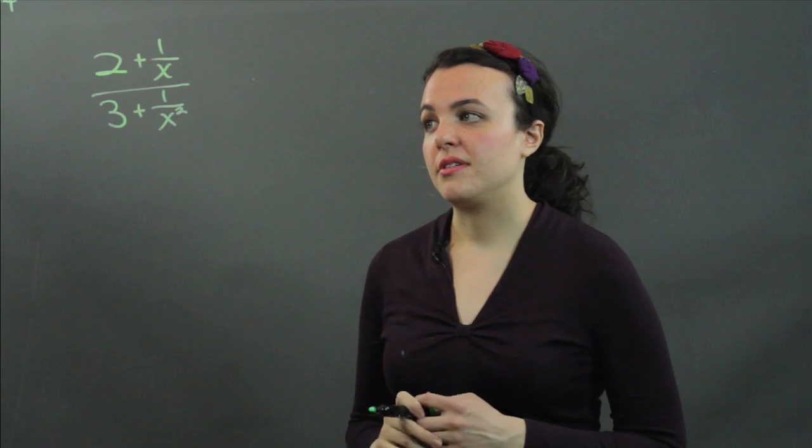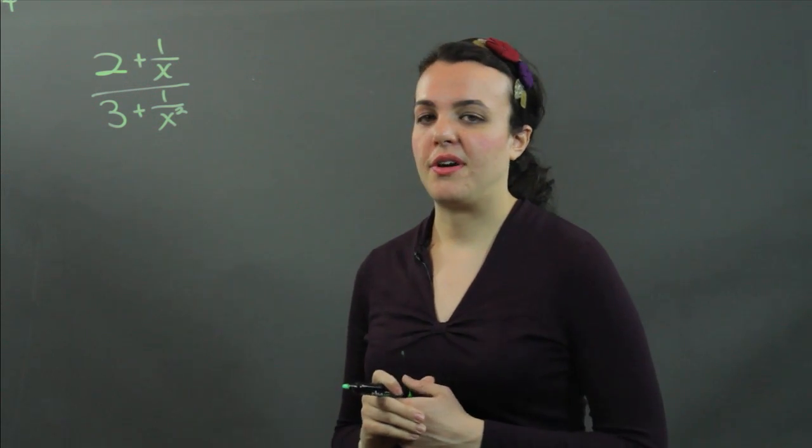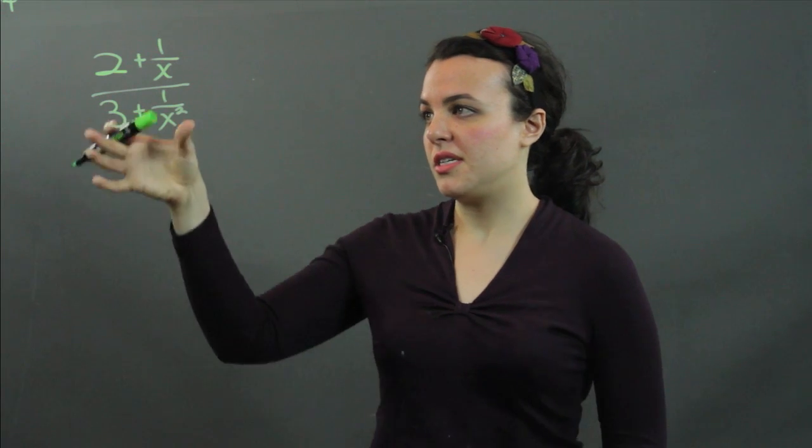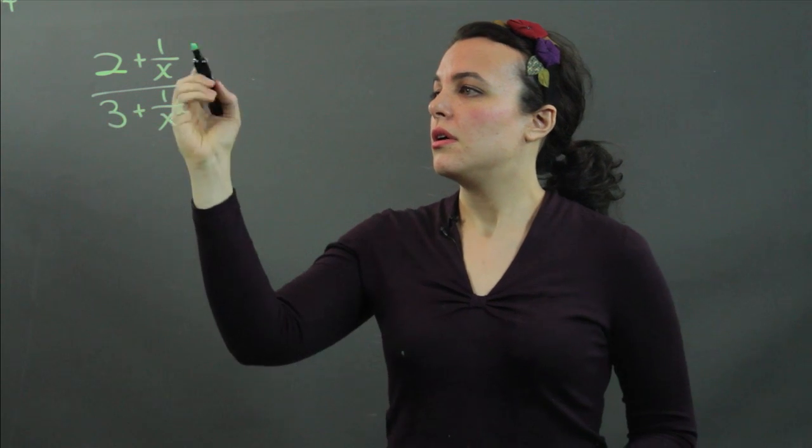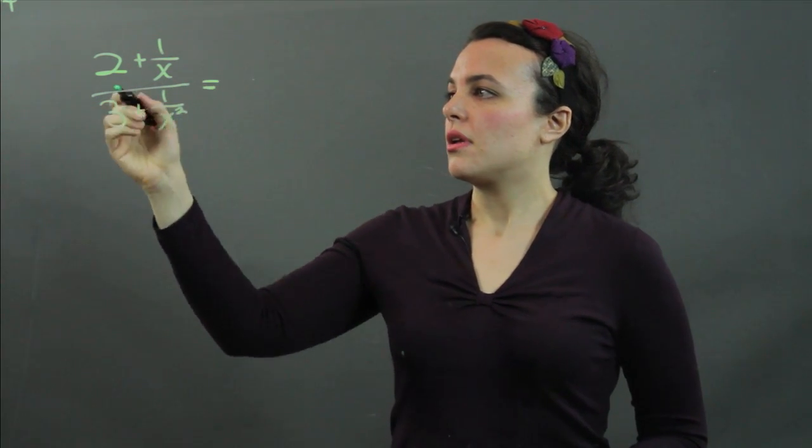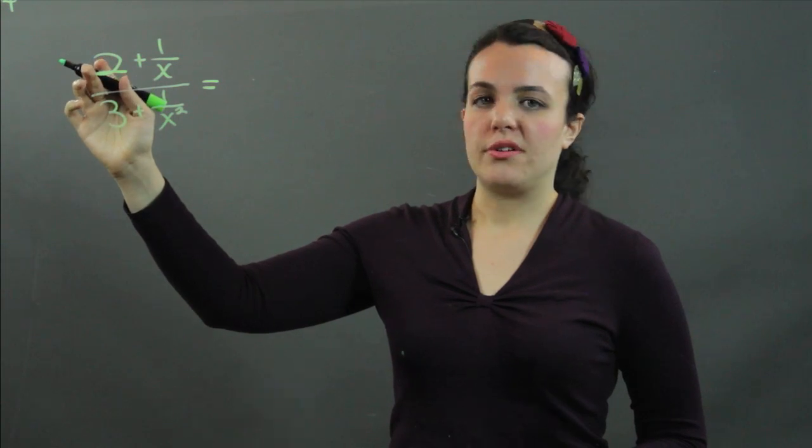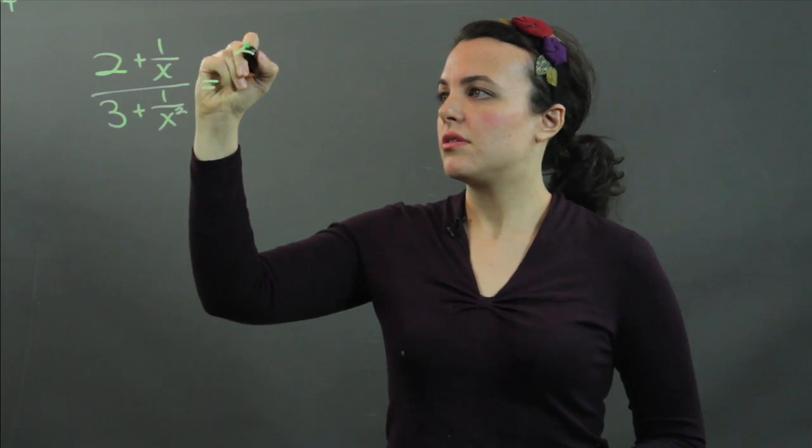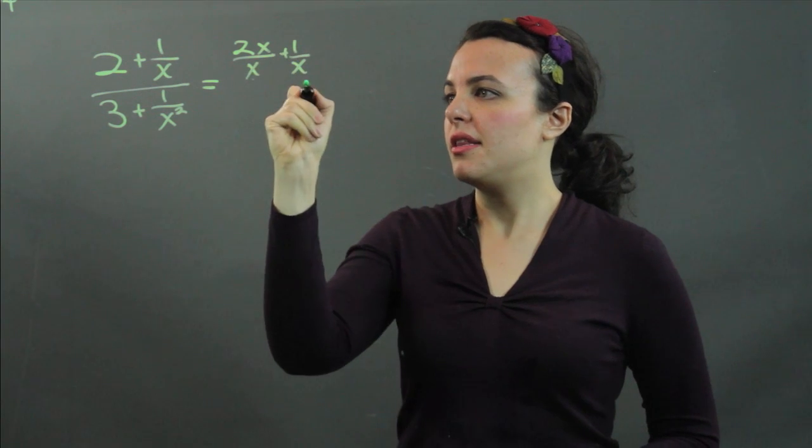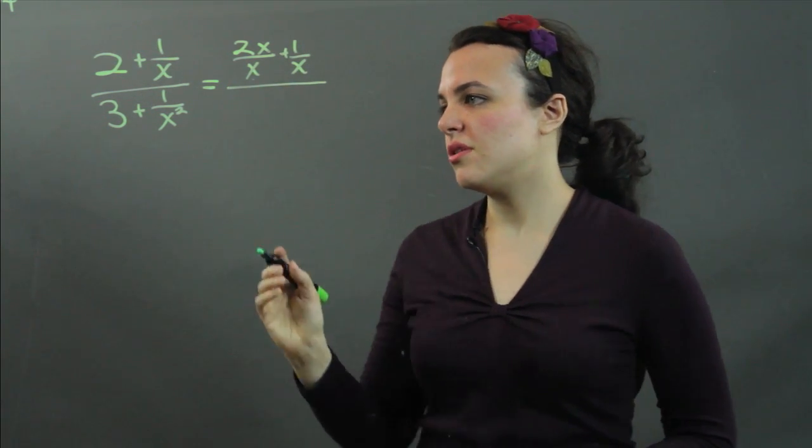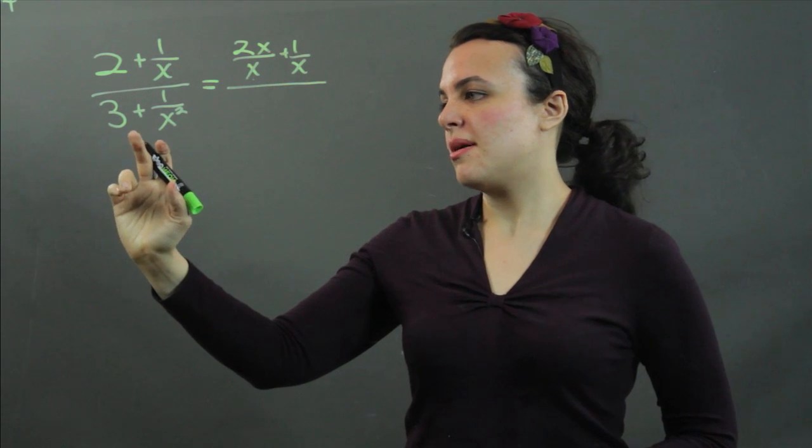The way to simplify this is how you simplify fractions. We're going to deal with the numerator first, then the denominator. The common denominator in the numerator is x, so I write (2x/x) + (1/x), and then that is all over the denominator.